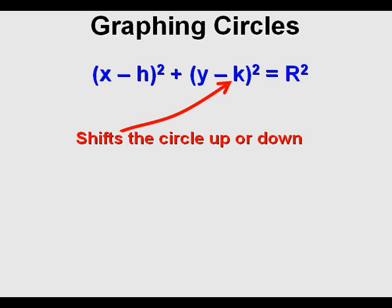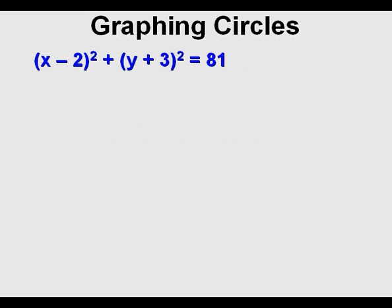Let's look at this equation: (x - 2)² + (y + 3)² = 81. Now be honest with yourself, does this look like an easy equation to graph?